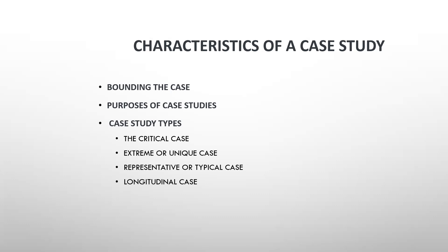The next type is extreme or unique case — somebody who stands out. For example, there are a lot of people who are twins, but very few are conjoined twins, even as adults. That is a unique aspect. So if we are trying to understand how the lifestyle of these people is, that is a unique case.